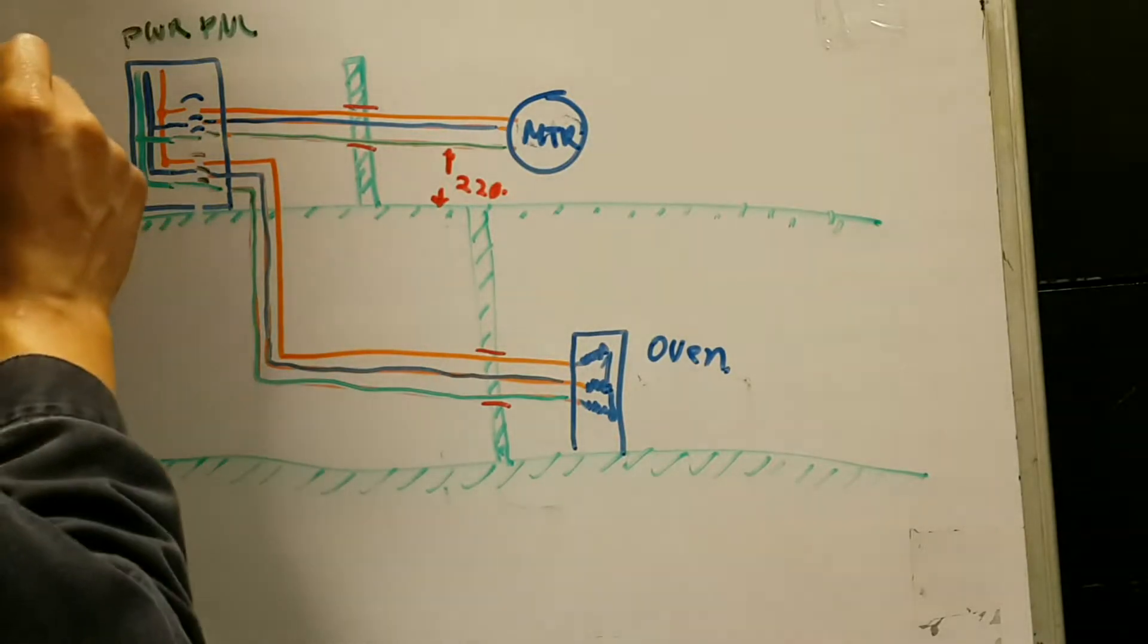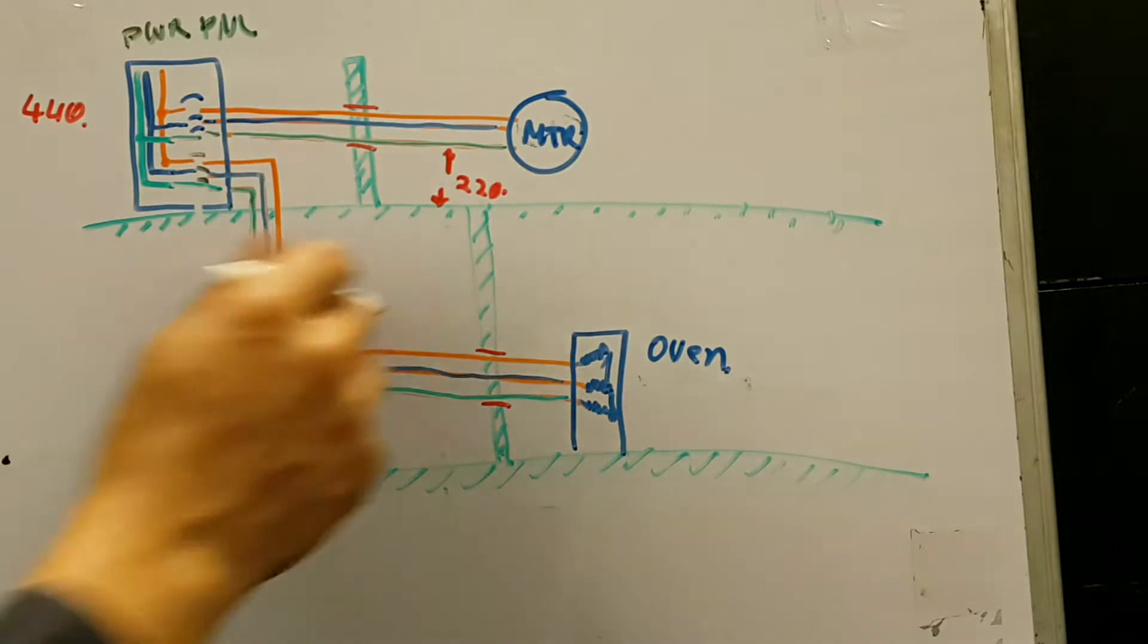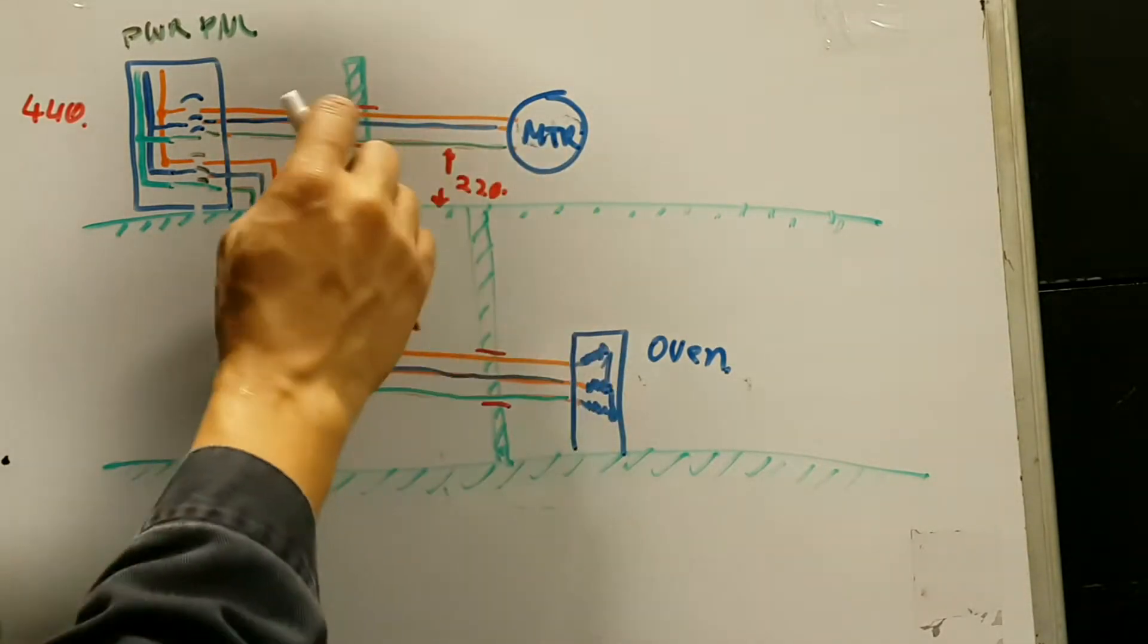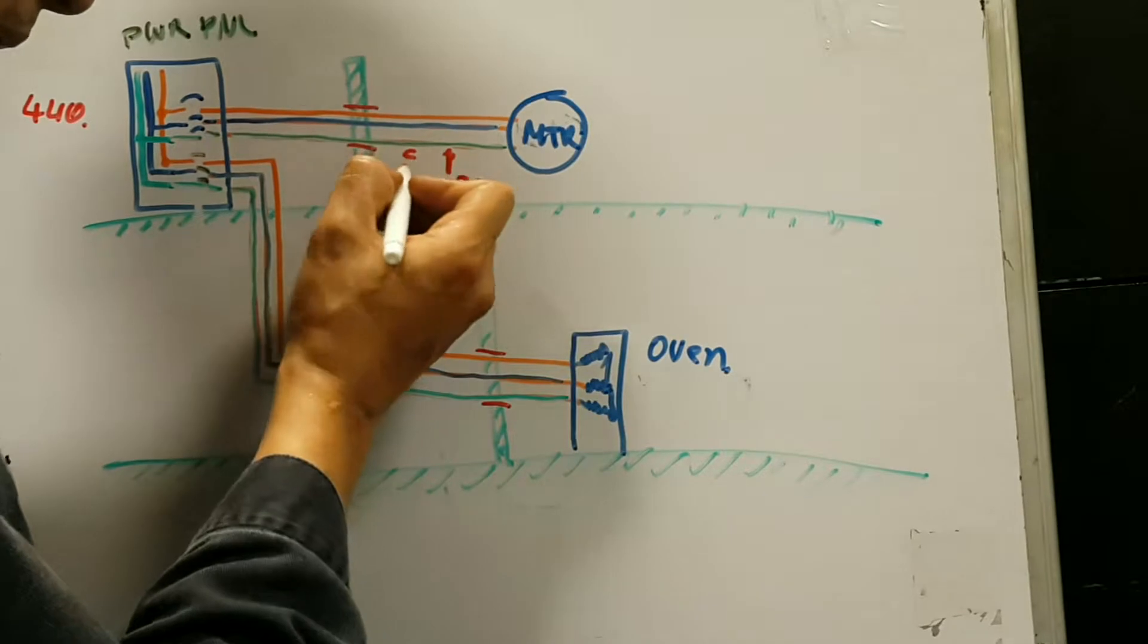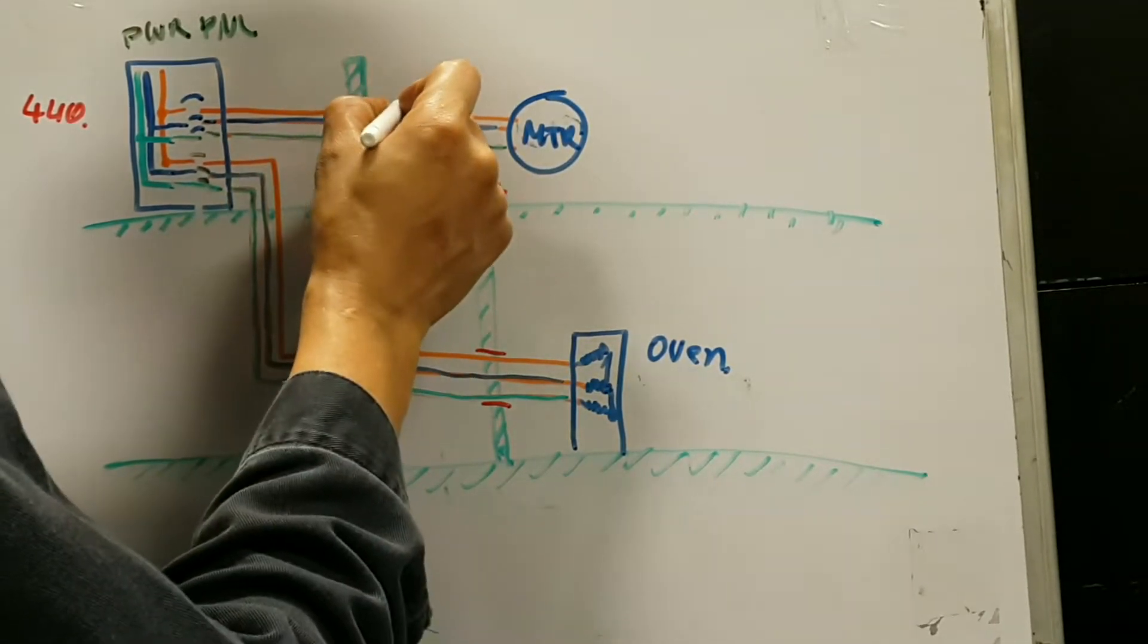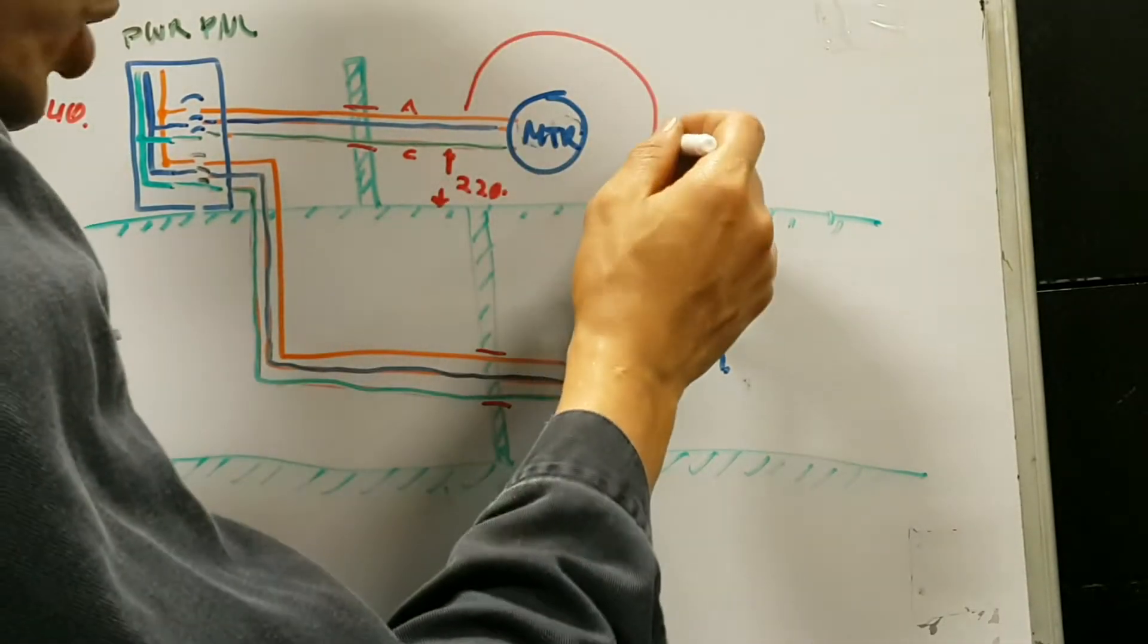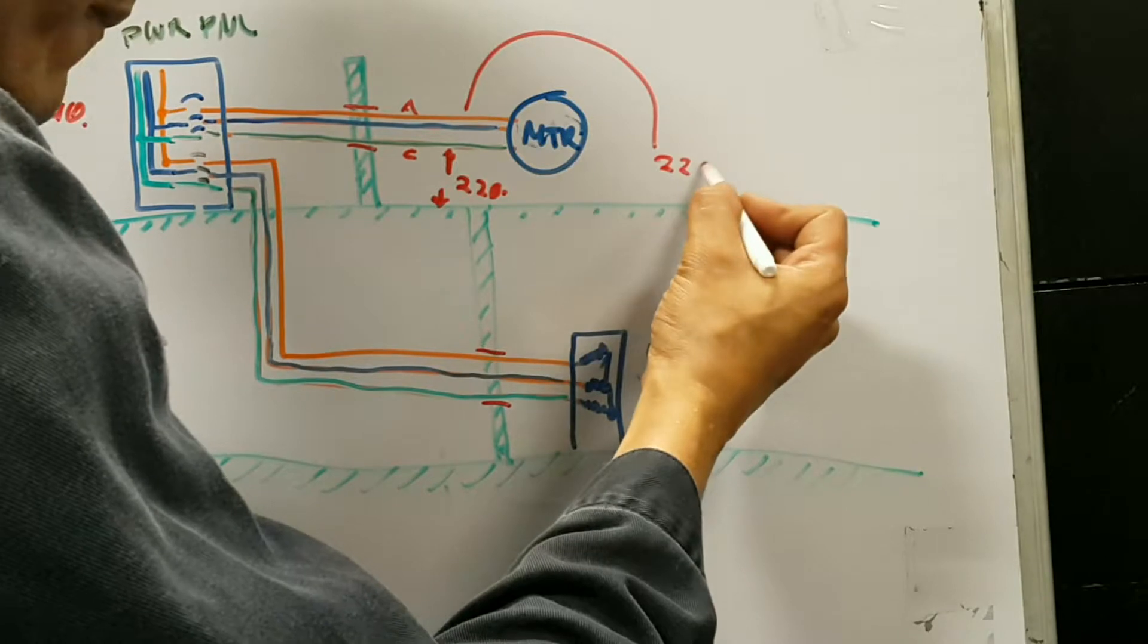Now, that is assuming that this is a 440 volt system. The difference of potential between this case, this would be Charlie phase, and the ship is 220 volts. The top phase would be alpha phase. The difference of potential between that one and the ship is 220 volts.